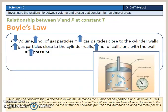Also, we can conclude that a decrease in volume increases the number of gas particles per unit volume. This results in an increase in the number of gas particles close to the cylinder walls, and therefore an increase in the number of collisions with the wall. As the number of collisions per unit area increases, so does the force per unit area.